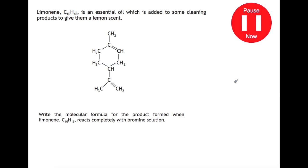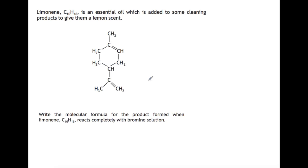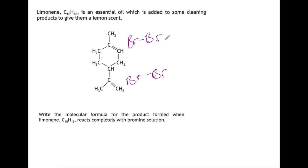Try this recent exam question. Limonene, whose structure is shown here, has the formula C₁₀H₁₆. It's an essential oil which gives cleaning products a lemony scent. You're to write the molecular formula for the product when limonene reacts completely with bromine solution. What you need to notice is that there are two double bonds, which means that when this reacts with bromine, a bromine molecule reacts with each of the double bonds. So you're going to gain four Br atoms when this is completely reacted with bromine solution. That means the formula will be C₁₀H₁₆Br₄.